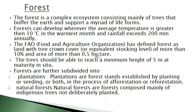The FAO — Food and Agriculture Organization — has defined forest as land with tree crown cover or equivalent stocking level of more than 10% and area of more than 0.5 hectare. The trees should be able to reach a minimum height of 5 meters at maturity in situ. Forests are further subdivided into plantation and natural forest. Natural forests are composed mainly of indigenous trees, not deliberately planted. Plantations are forest stands established by planting or seeding in the process of afforestation/reforestation.